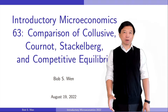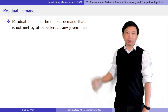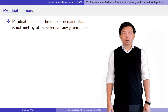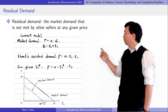Before we look at the graphs, I want to introduce the concept of residual demand. Residual demand is the market demand that is not met by other sellers at any given price. A firm sells only to people who have not already purchased the product from other sellers. For example, in the Cournot model, we assume that the market demand is P equals A minus Q, where the market output Q is the sum of the two firms' quantities. Firm 1's residual demand is P equals A minus Q1 minus Q2.